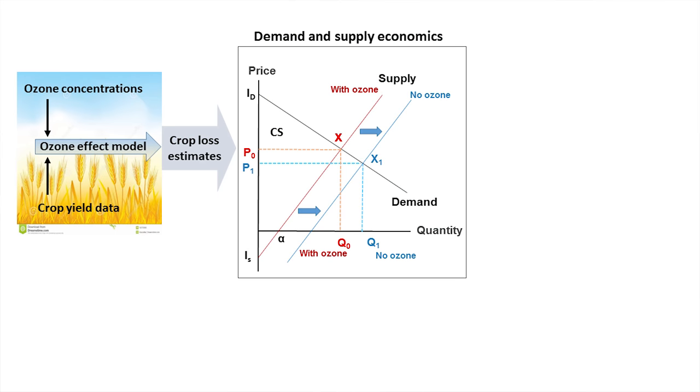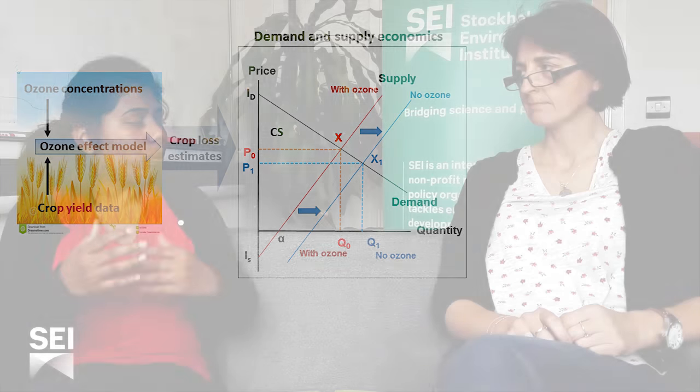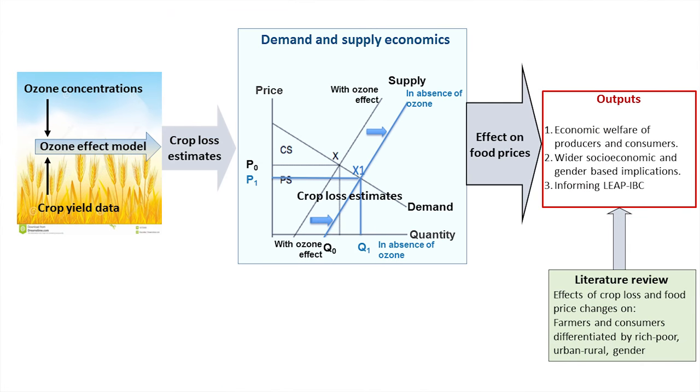So given those issues, Divya, how are we going to try and bring all of this together in our project? So in this project, we are still focusing on yield, for which we are using model estimates of yield losses due to air pollution. But we are combining it with economics, demand and supply theory, and elasticity theory to understand more quantitatively how these changes in yield are going to change the prices of the produce and then how it's going to change the welfare of the farmer and prices for the consumers. But to understand in more depth how it's going to affect wider groups in society, we are relying on literature review — to include the different income groups from urban and rural areas and how the effects are going to be differentiated according to gender.